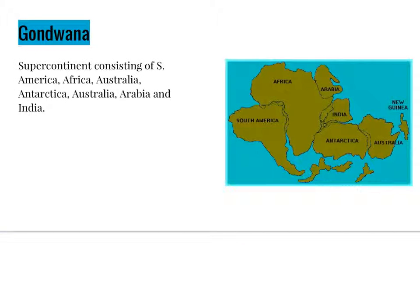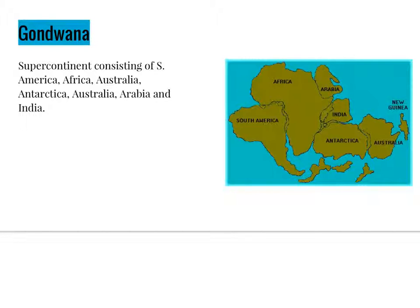Gondwana! Gondwana was a supercontinent mostly formed by South America, Africa, Australia, and Antarctica. This supercontinent explained the similarities amongst different species and how it is possible for these species to be distributed across what are now different continents. In conclusion, it was not just the dispersal from continent to continent, but also the splitting of continents and how they took the species with them.